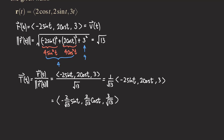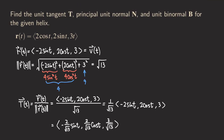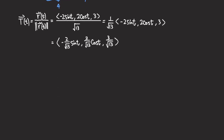If we want a specific value for t, we can say, for example, let's find capital T of 1 — then we just plug 1 into t. So that is our unit tangent function. Next we want to find the principal unit normal. For the principal unit normal N(t), we want to find this as the derivative of the unit tangent divided by its own magnitude, so that it becomes a unit vector.